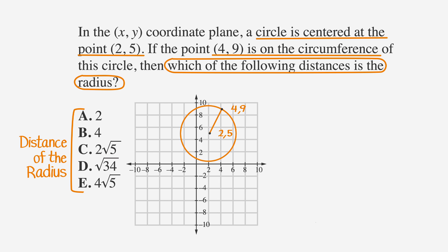To find the radius of our circle, all we have to do is find the distance between our two points. Let's label our two points so that x1y1 is two comma five and x2y2 is four comma nine. Now we're ready for the distance formula.